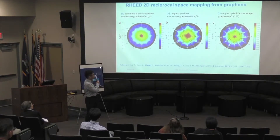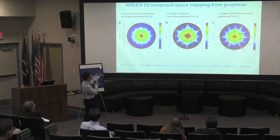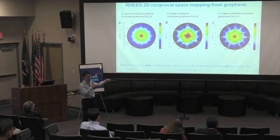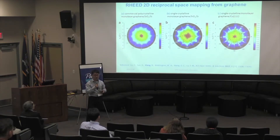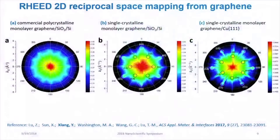From this reciprocal mapping, the first sample seems to be more or less uniform with some weak twelvefold symmetry. We can infer that this sample is mostly polycrystalline but with some weak preferred orientation at zero degrees and 30 degrees. But for the samples shown in figures B and C, we observed a clear sixfold symmetry.